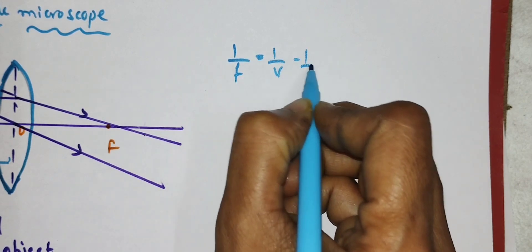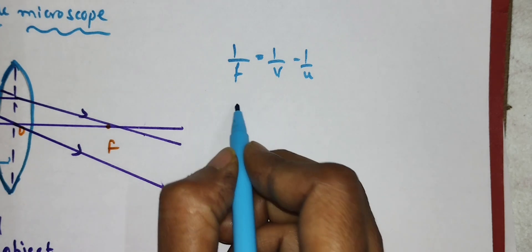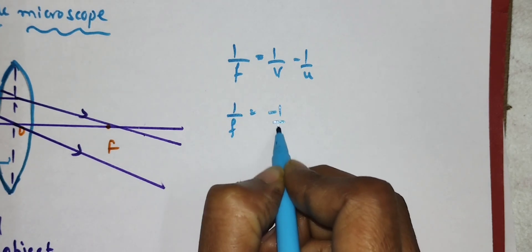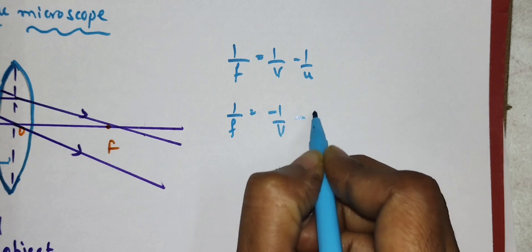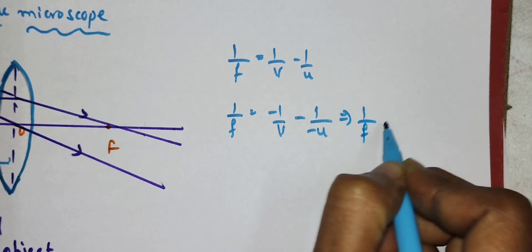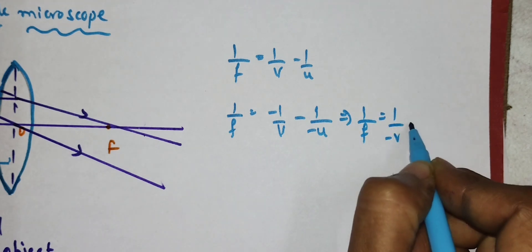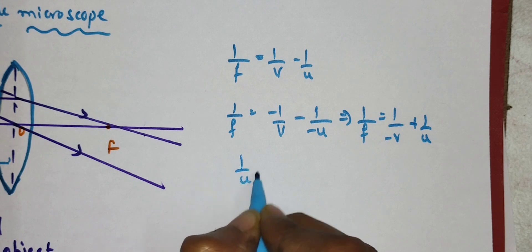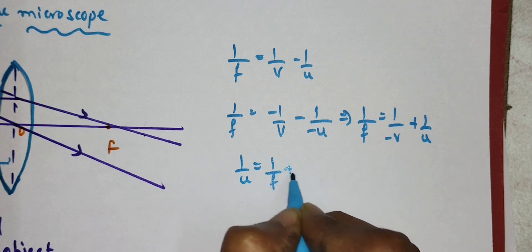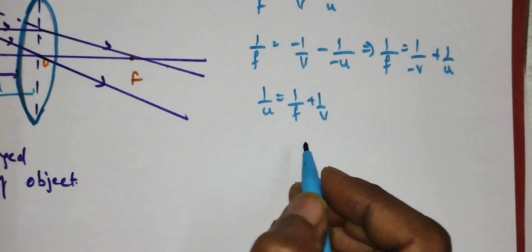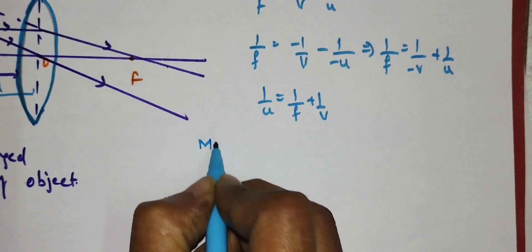From the lens equation, 1/F = 1/V − 1/U. F is positive for a convex lens, and since the image is forming on the same side, the image distance is negative and the object distance is also negative. By the sign convention, we get 1/F = −1/V + 1/U. From this, 1/U = 1/F + 1/V.